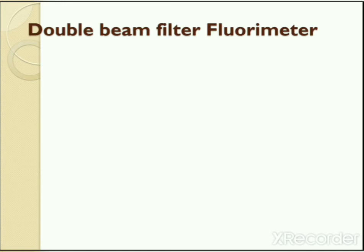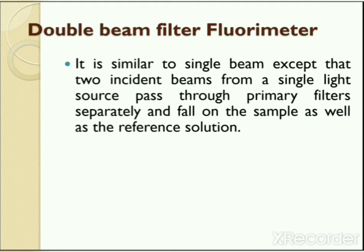Next is the double beam filter fluorimeter. In this type of instrument, two incident beams from a single light source pass through a primary filter separately and fall on the sample as well as the reference solution. The advantage of this type of instrument is that it can measure the sample as well as the reference at the same time. This reduces the chances of errors produced by changes in the intensity of radiation when sample and reference are analyzed separately, as in single beam instruments.